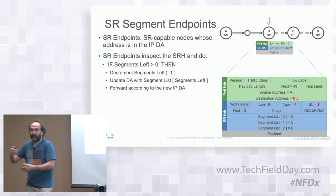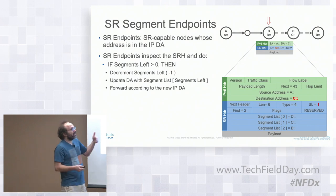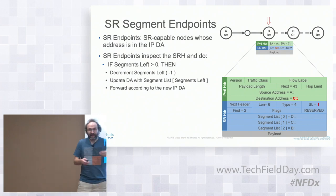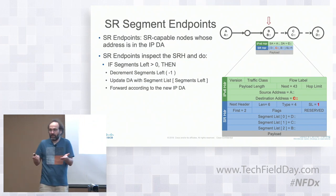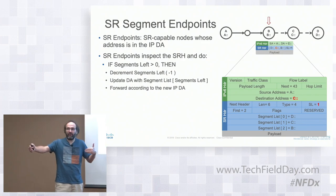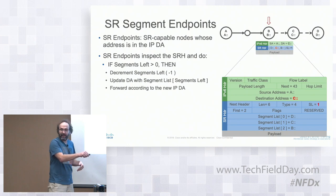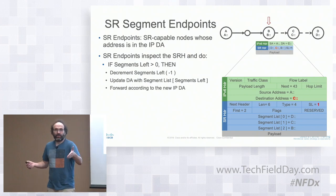After routing through intermediate hops, the packet reaches router B. B has the SRV6 end function at address B::. It decrements segments left—now C becomes the new active segment. B copies C:: into the IPv6 destination address and forwards the packet toward C along the shortest path. Any routers between B and C just do plain IPv6 forwarding.